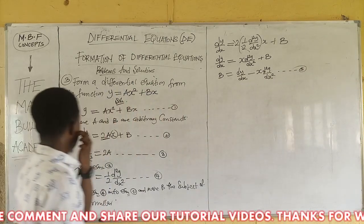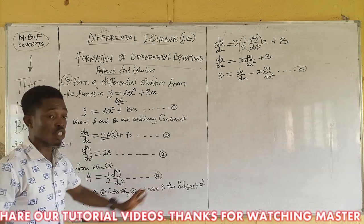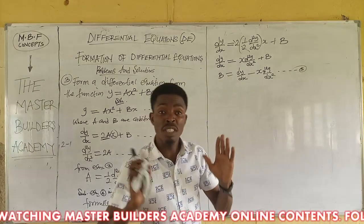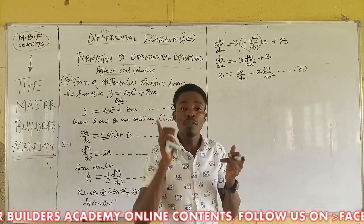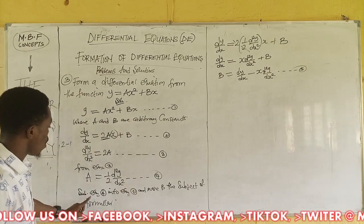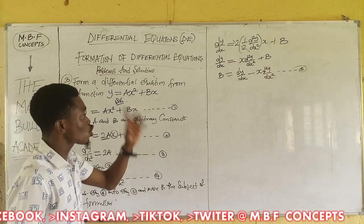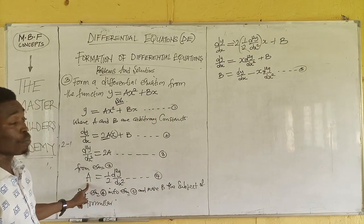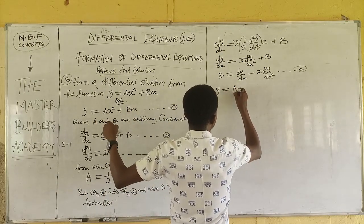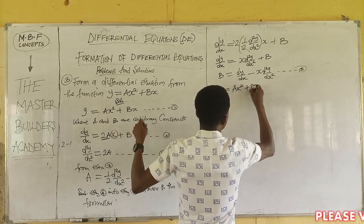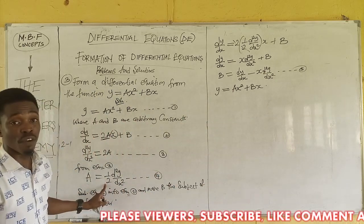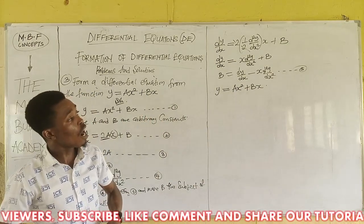Now that we have made both arbitrary constants the subject of formula — equation four gives the value for a, and equation five gives the value for b — all we need to do is substitute equations four and five into equation one. Equation one is y equals ax² plus bx. We replace a with equation four and replace b with the right-hand side of equation five.